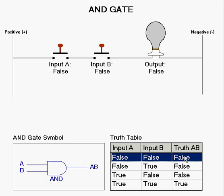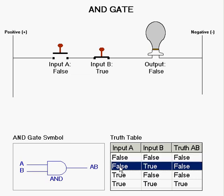But when the values of the switches are false and true, as you can see with input B now true, the output is still false.